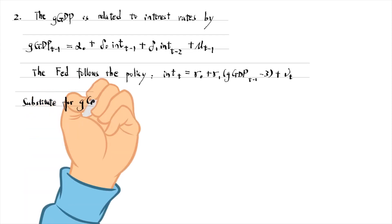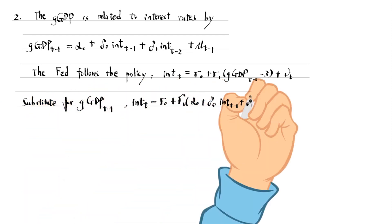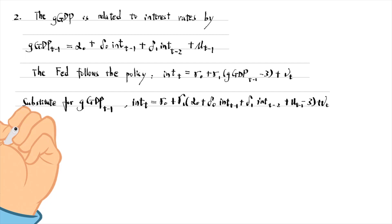Then we substitute for GDP t minus 1 in the federal reserve policy equation and rearrange it.